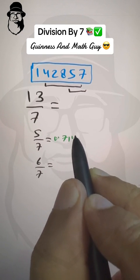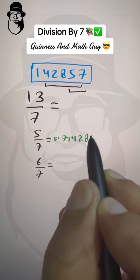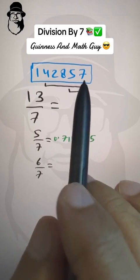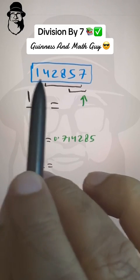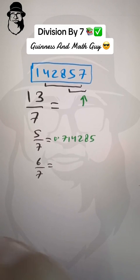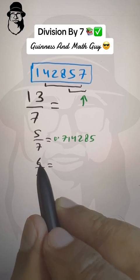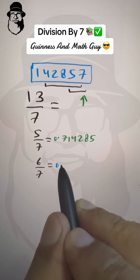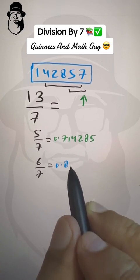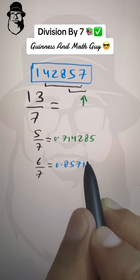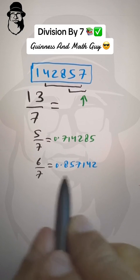0 point 7, 1, 4, 2, 8, 5, then 7, 1, 4, 2, 8, 5. We started from 7, then 1, 4, 2, 8, 5, and that's the correct answer. You can check with the calculator. And here, if we increase by 2, this 6 will become 8. So we start with 8: 8, 5, 7, 1, 4, 2, 8, 5, 7.